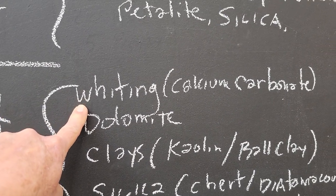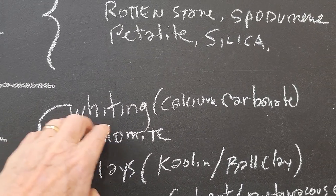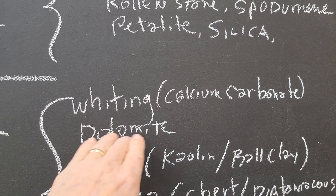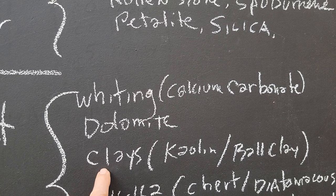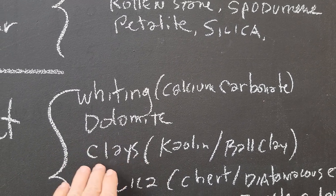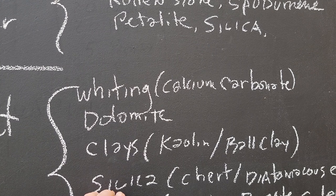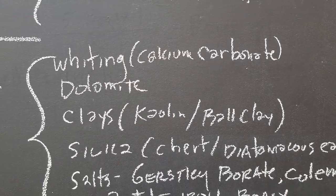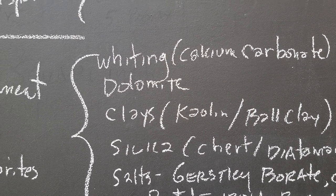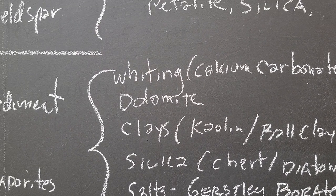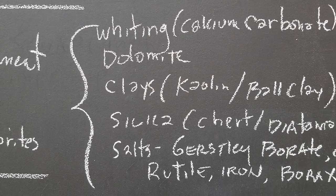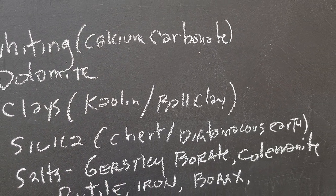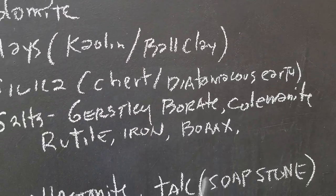From sedimentary sources, we get calcium carbonate, or limestone, which we call whiting. Dolomite has magnesium in it. You get all kinds of clays from sedimentary processes. Silica — I'll show you some chert — these are different forms of silica aside from what we get in feldspar and granite. Many things are also formed in salt flats: colemanite, borax, Gerstley borate, etc.